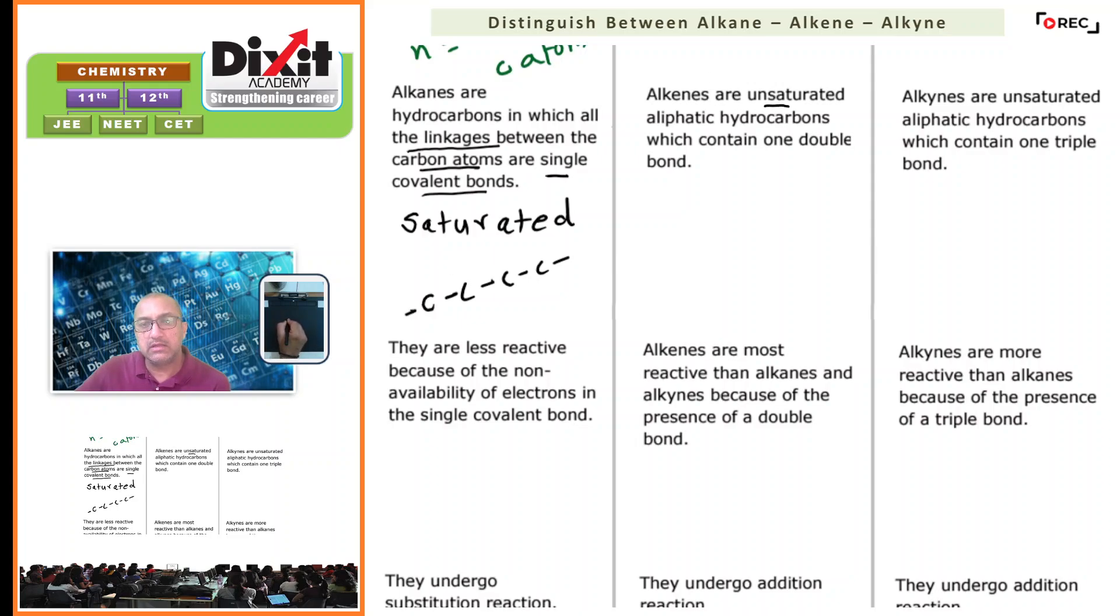Alkenes are unsaturated hydrocarbons in which all four valencies of carbon atoms are not satisfied with single bonds. In the case of alkenes, we have carbon-carbon double bonds, and in the case of alkynes, the type of linkage present is carbon-carbon triple bonds.